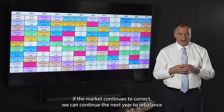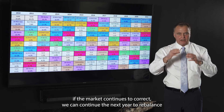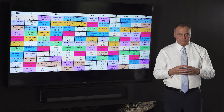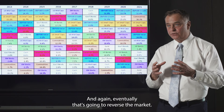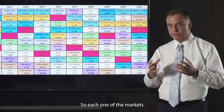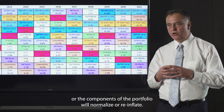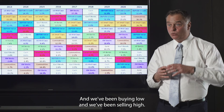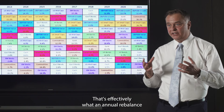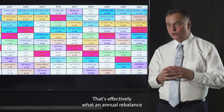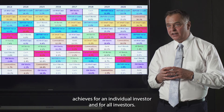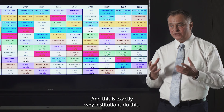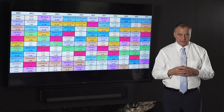And even if the market continues to correct, we can continue rebalancing the next year, continually buying equities while they're at a low. Eventually, the market will reverse — each component of the portfolio will normalize and reinflate — and we've been buying low and selling high. That's effectively what an annual rebalance achieves for all investors. This is exactly why institutions do this.